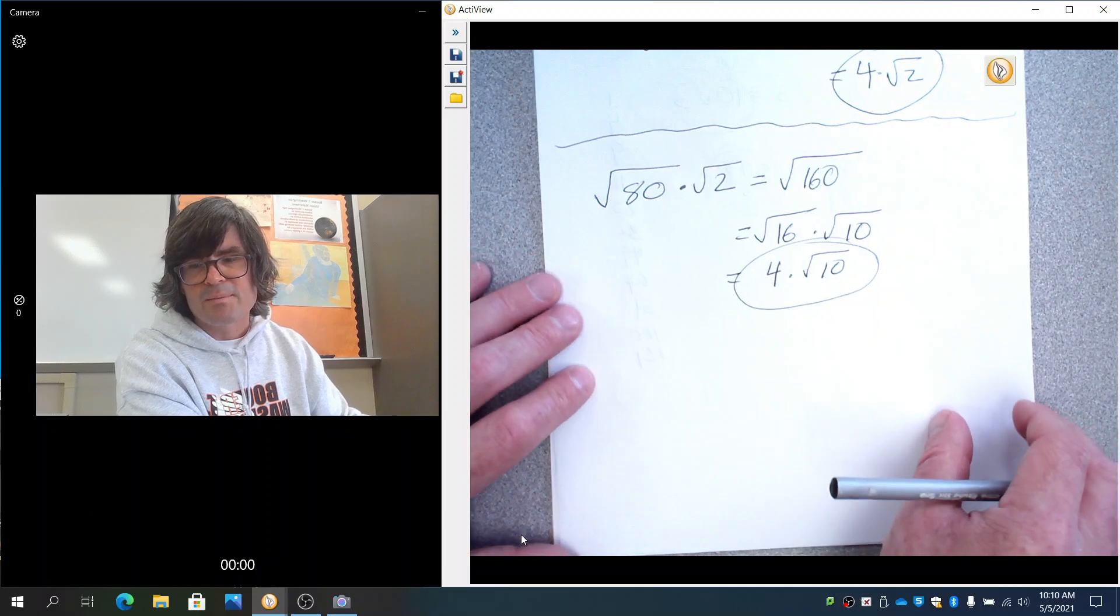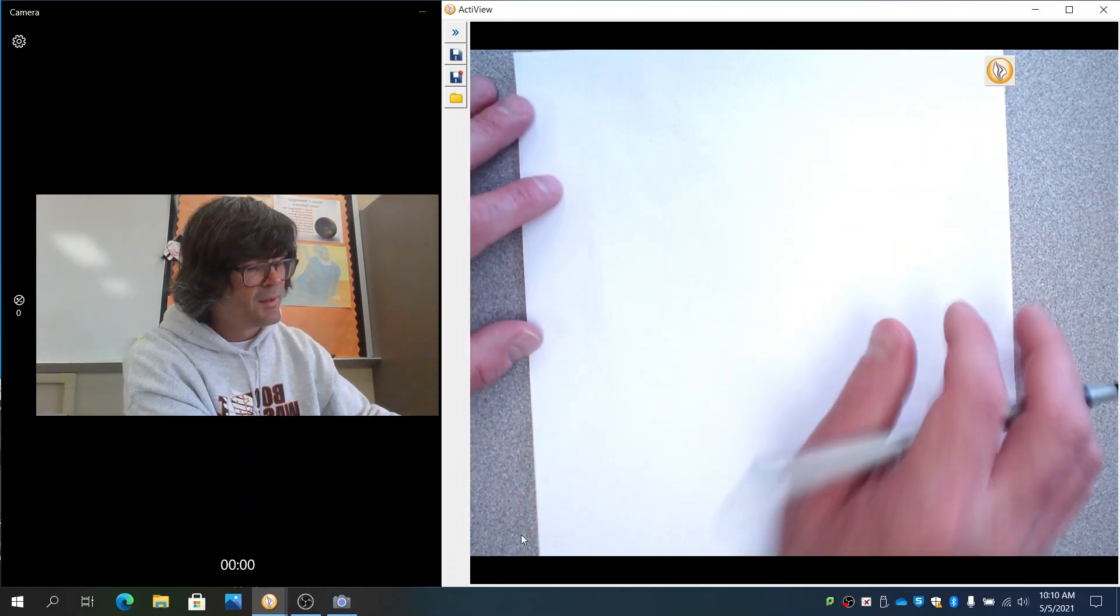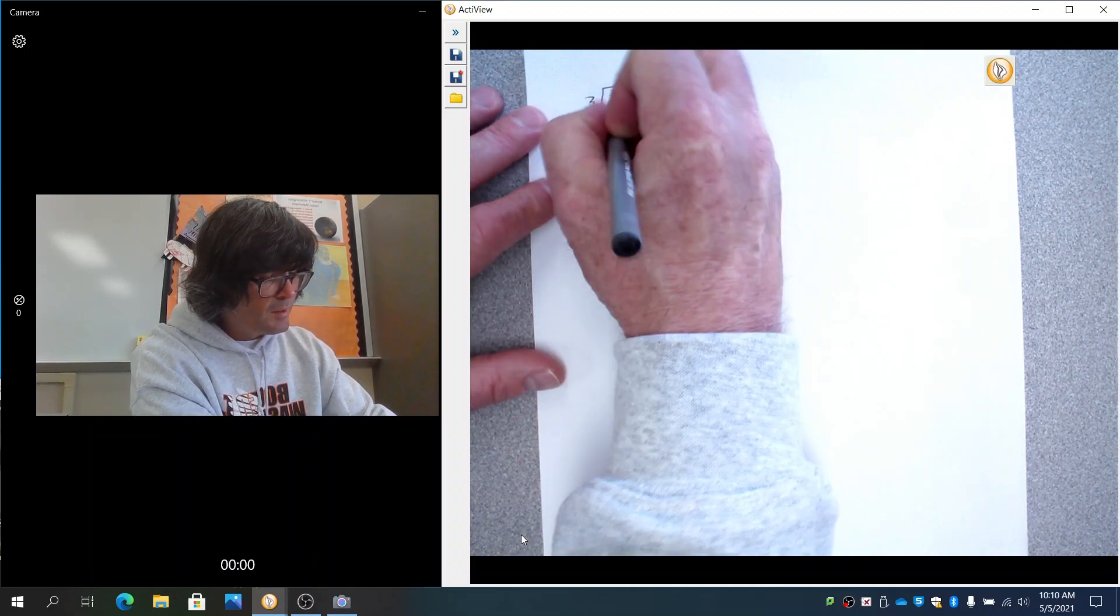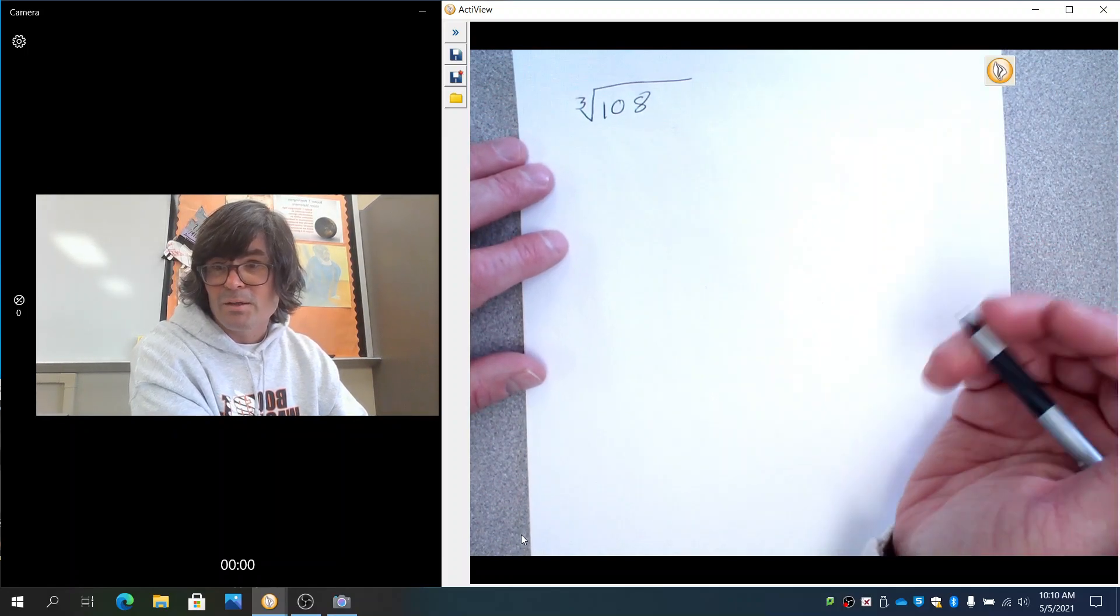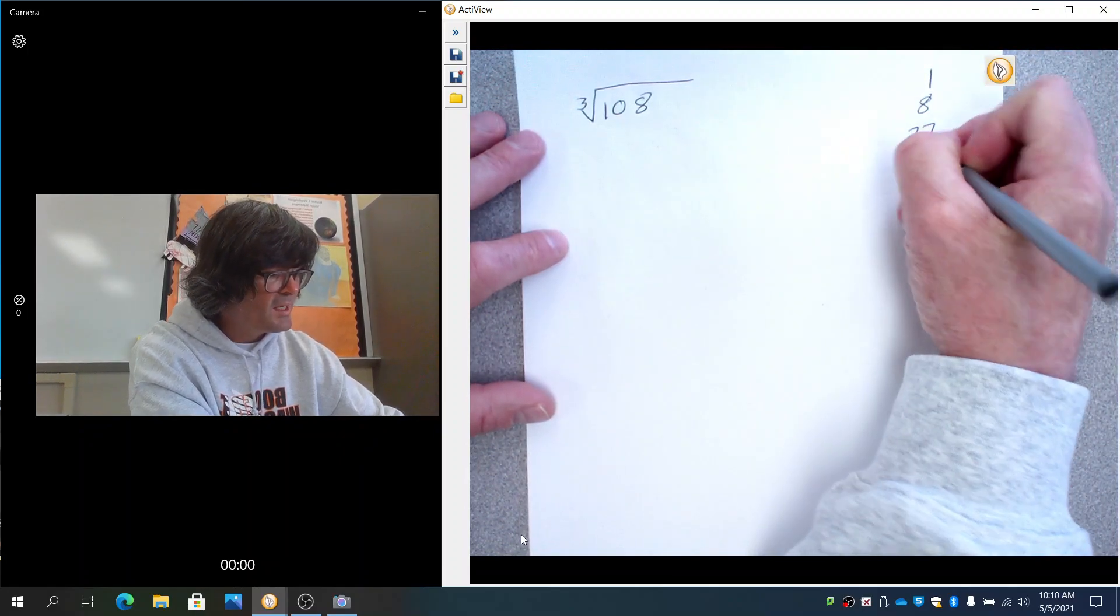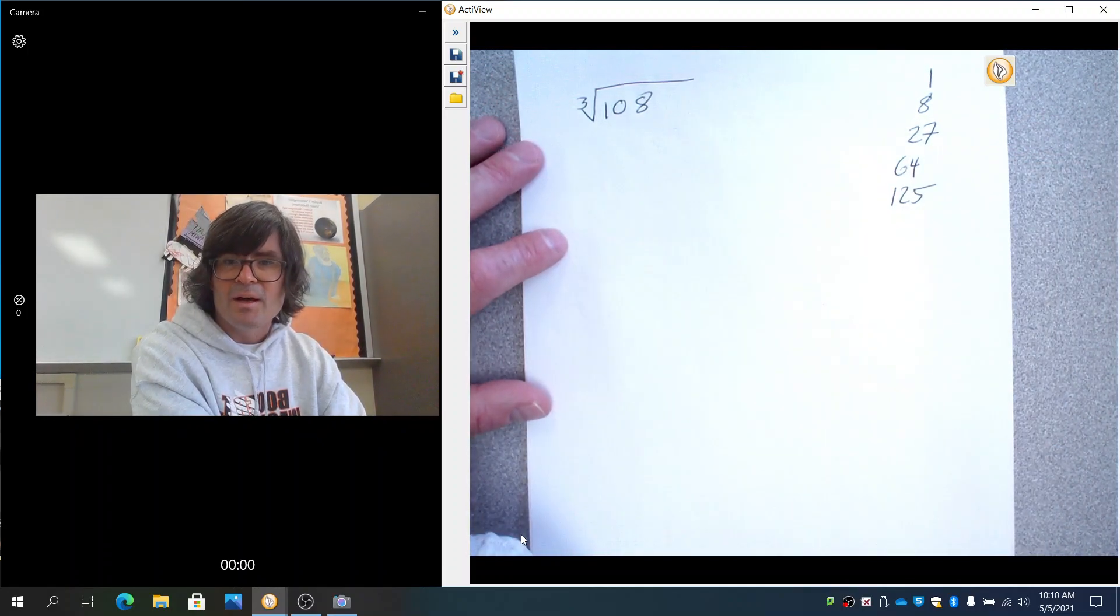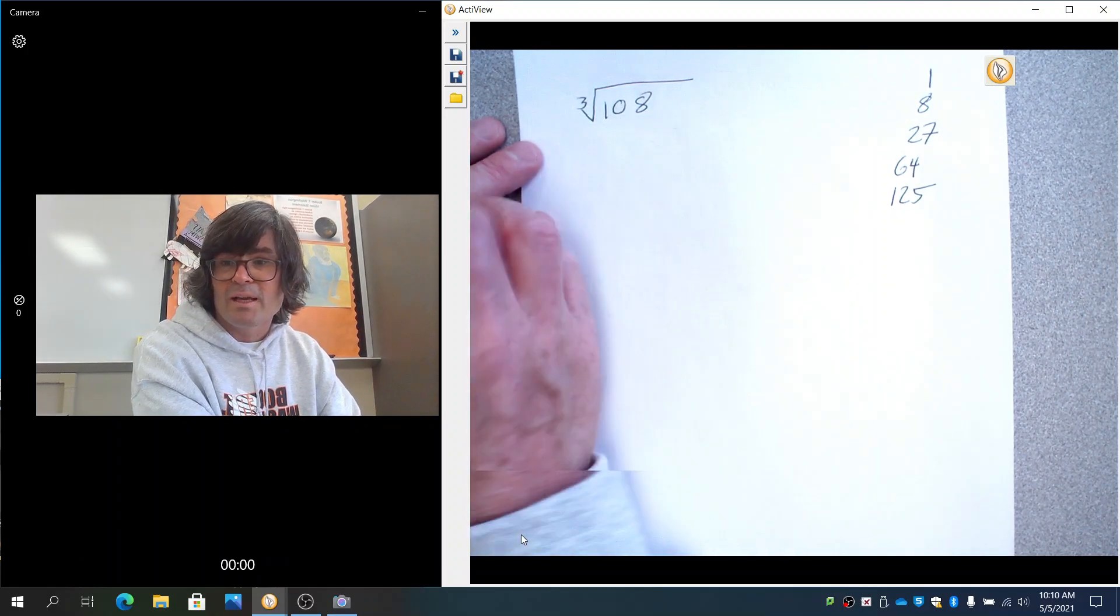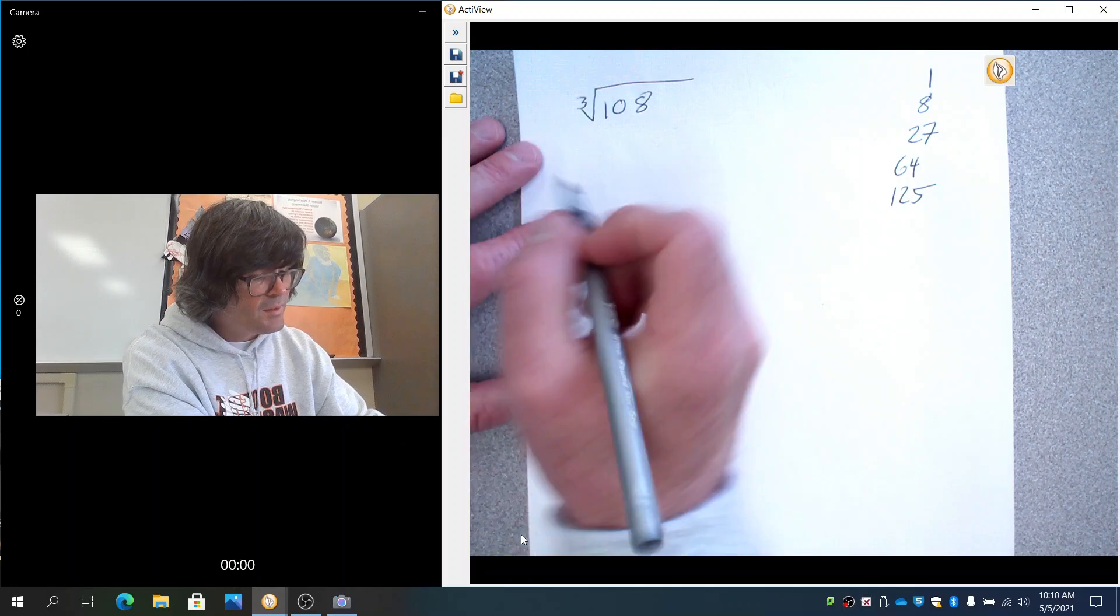Sometimes you might have a higher root, and those become really challenging. I'm going to do an example of the cube root of 108. You may not know your cube roots all that well. 1 cubed is 1, 2 cubed is 8, 3 cubed is 27, 4 cubed is 64, 5 cubed is 125, and they keep going. But you may not automatically recognize if there's a nice cube root that goes into 108. So what you can do is, if all else fails, break it into prime factors.